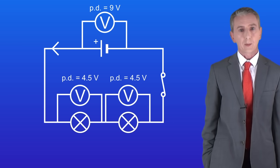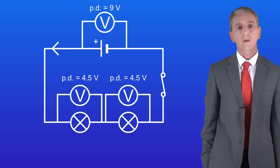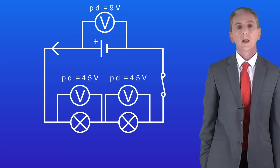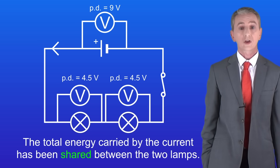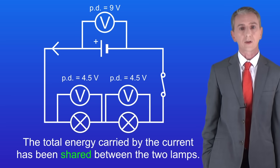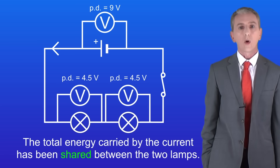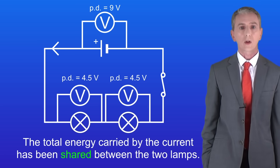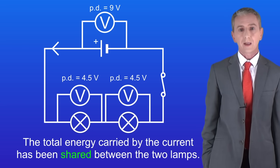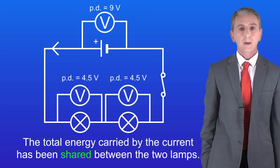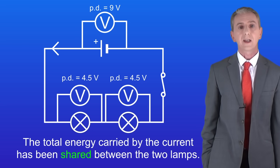The potential difference across each lamp is 4.5 volts. The total energy carried by the current has been shared between the two lamps, and that explains why both lamps are dimmer. If there's only one lamp, all of the energy is transferred to that one lamp so it's bright. But with two lamps in series, the energy is shared so each is dimmer.